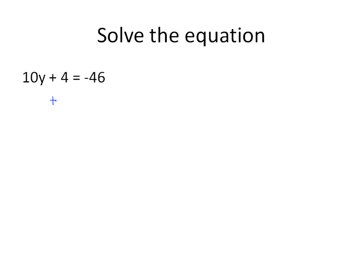We have 10y plus 4. We know the opposite of plus 4 is minus 4. So we're going to subtract 4 from both sides of this equation. And that will leave us with 10y on the left side. And negative 46 minus 4 gives us negative 50. Make sure to keep an eye on those negative numbers, because they are the ones that tend to throw us off. Now we have 10y is equal to negative 50. I'm going to divide both sides by 10. And 10 divided by 10 is 1. 1 times y leaves us with y. Negative 50 divided by 10 will leave us with a negative 5. Y is equal to negative 5.